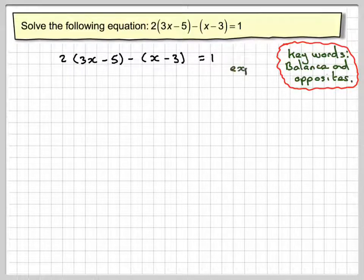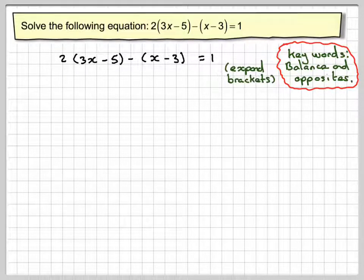The first step would be to remove the brackets or expand the brackets. So 2 times 3x gives me 6x, and 2 times minus 5 gives me minus 10.